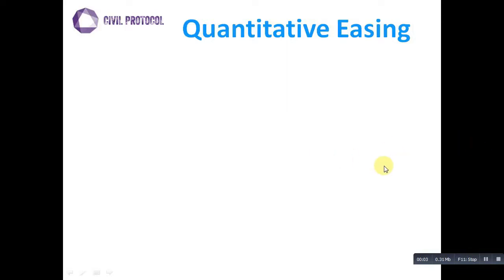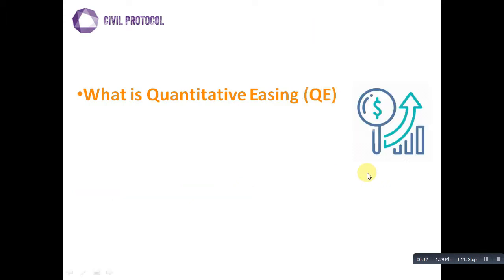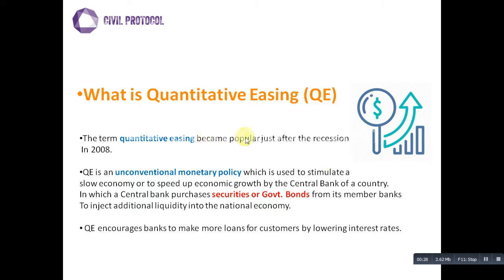Hello and welcome to Civil Protocol. Today we are going to discuss quantitative easing — what it is, why there is a need for QE in the economy, and how QE works. The term quantitative easing means easing of the quantity of liquidity to the market. It became popular after the recession of 2008 when the US Federal Reserve applied this unconventional monetary policy to stimulate economic growth.